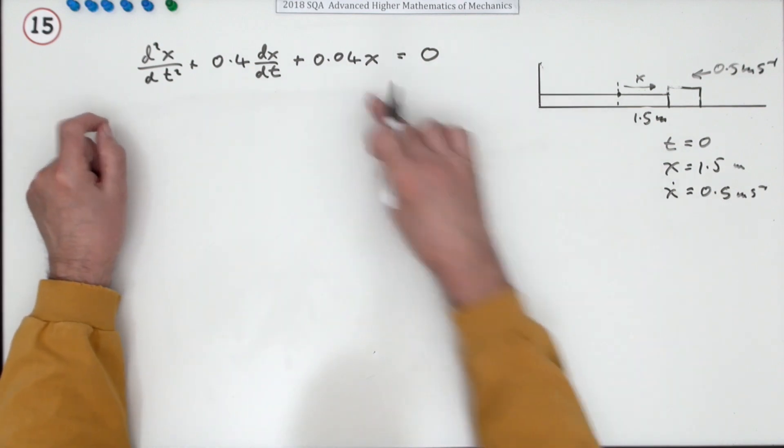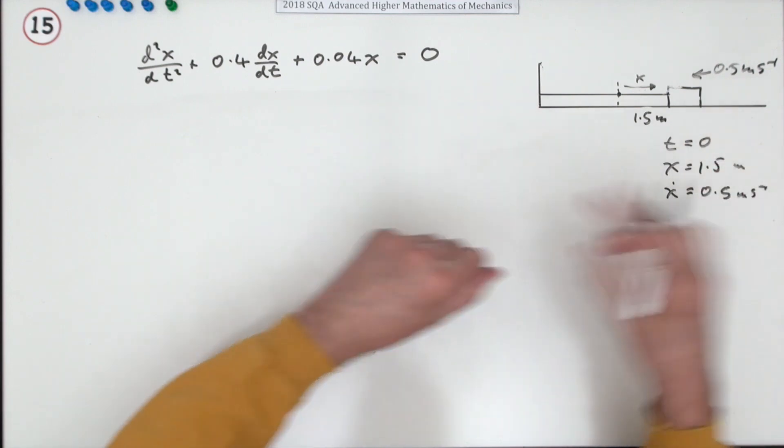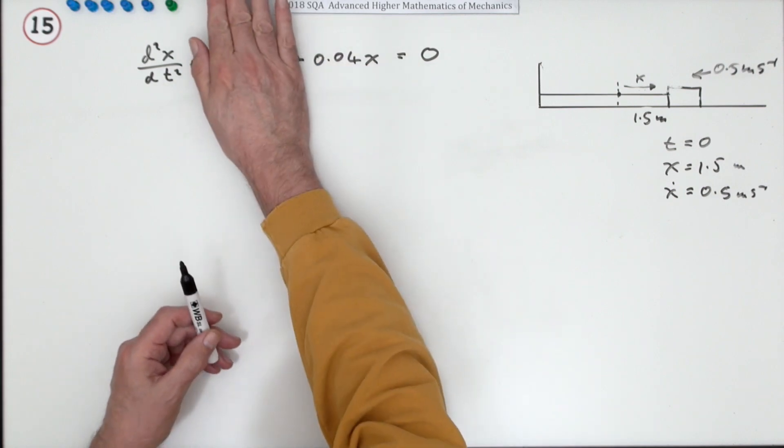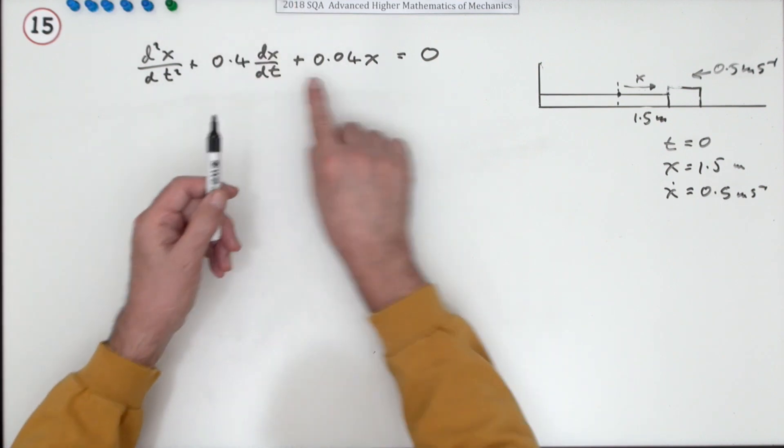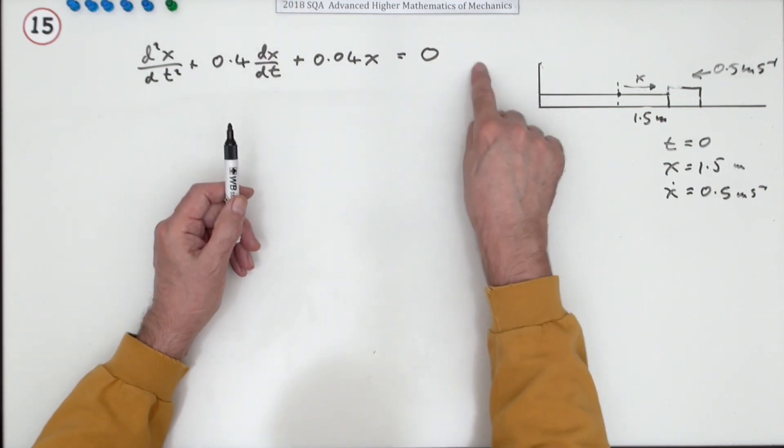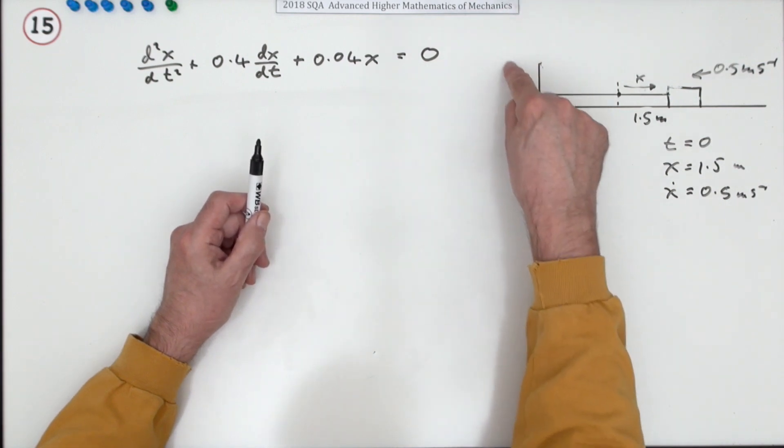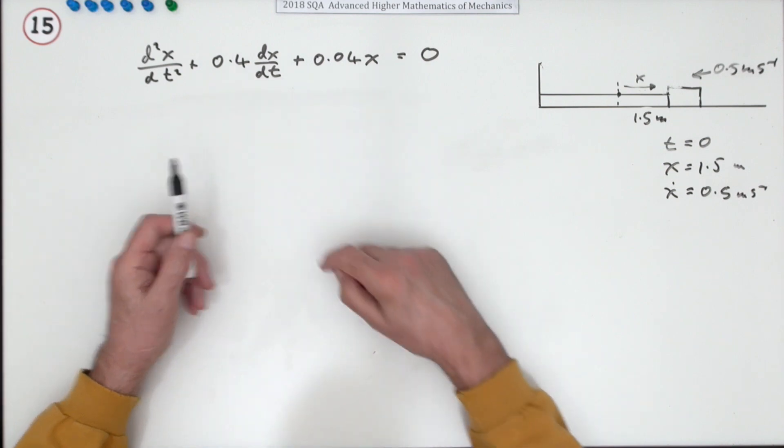Now it doesn't actually matter whether you recognize that as representing this motion or not, because it effectively just says solve that equation. But if you ignore that middle term, that's the equation for simple harmonic motion: the acceleration equals, and if you take this across, negative omega squared times x.